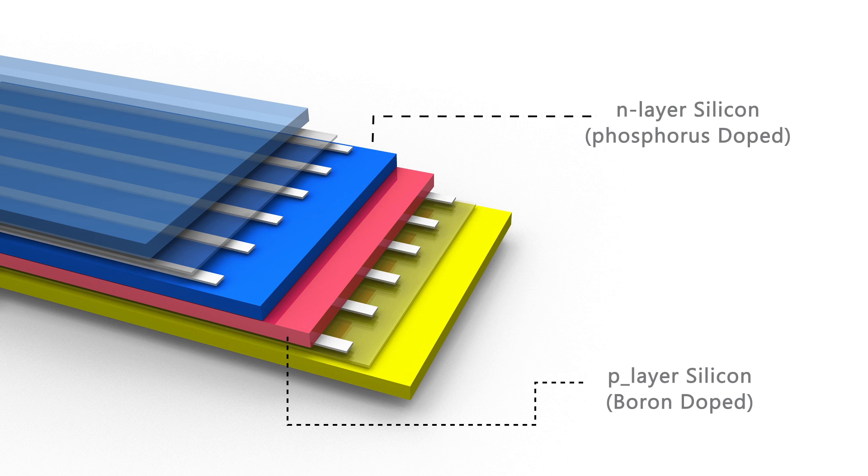The main components are n-layer silicon phosphorus doped and p-layer silicon boron doped. To allow electric flow of electrons, metallic conductors are installed on the layers.